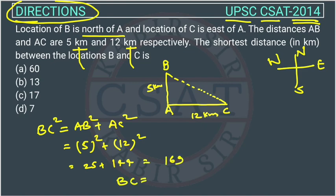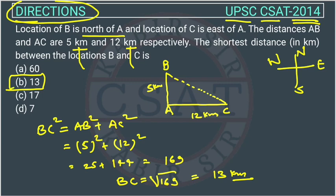BC will be equal to the square root of 169, and the square root of 169 is 13. So BC is equal to 13 kilometers. The answer is option B — the distance between B and C is 13 kilometers.